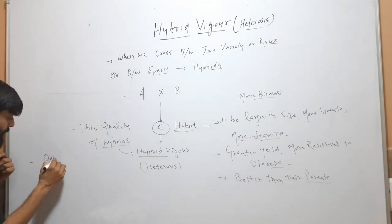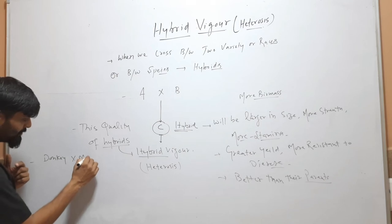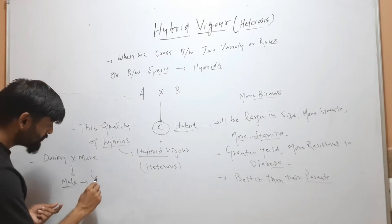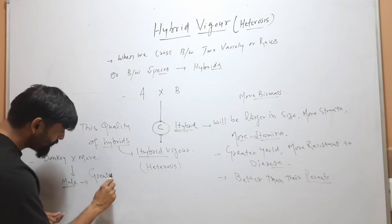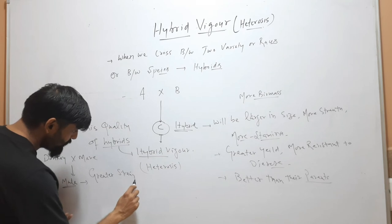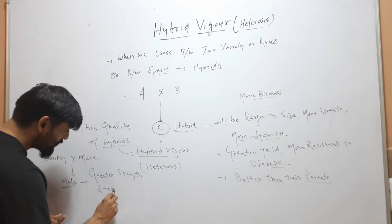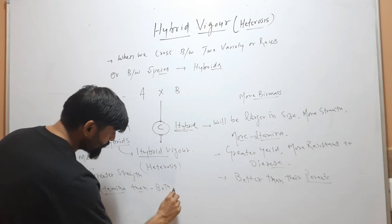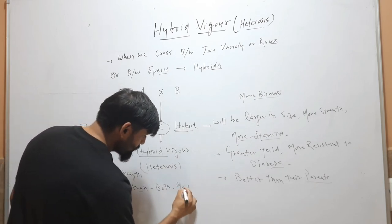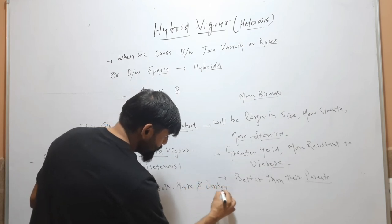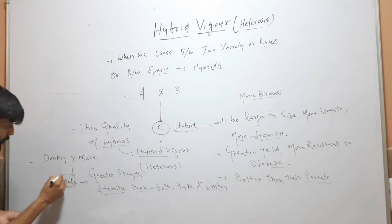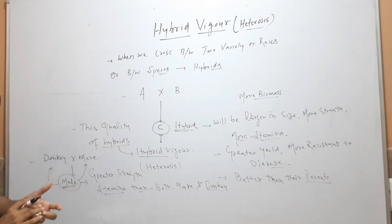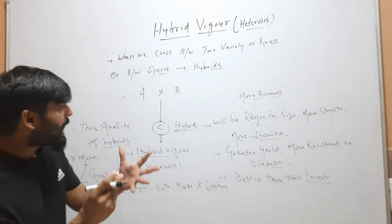For example, when we cross between a donkey and a mare, we get a mule. This mule will have greater strength and stamina than both the mare and the donkey. The mule will have strength and stamina from the donkey, and it will have intelligence from the mare. So it will be better than both of these. This is called hybrid vigor.